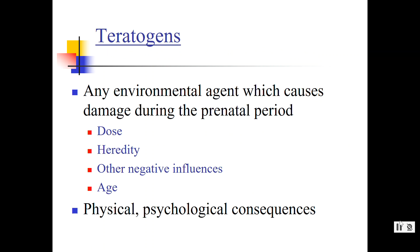Here are teratogens. A teratogen is any environmental agent that can cause damage during the prenatal periods, whether it is purposeful or unintentional. The damage depends on the dose consumed, hereditary susceptibility to that teratogen, whether there are multiple teratogens or other issues with the mother, and even the age of the mother. Most commonly, there are psychological and physical consequences for that child once they're born.